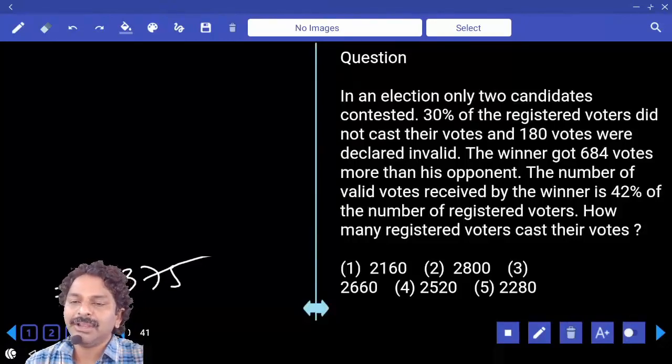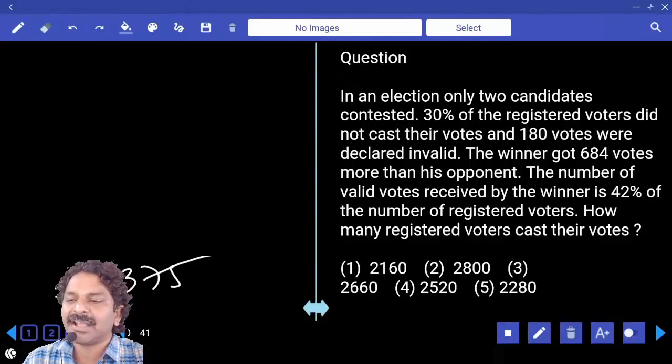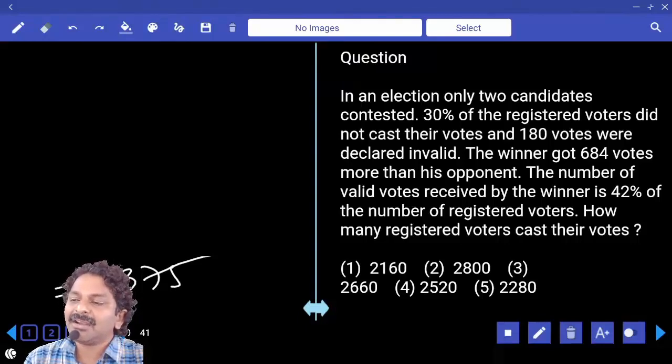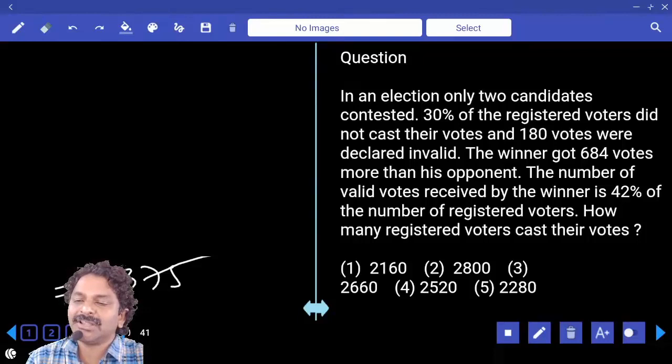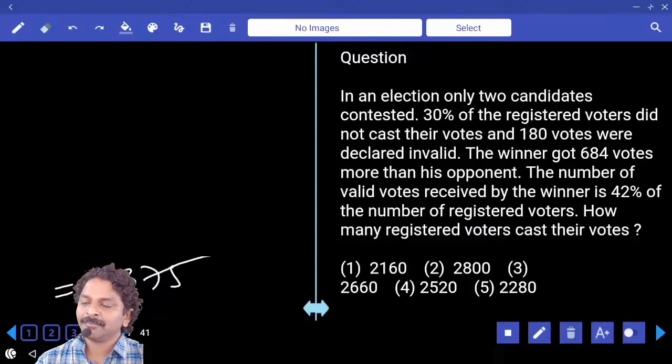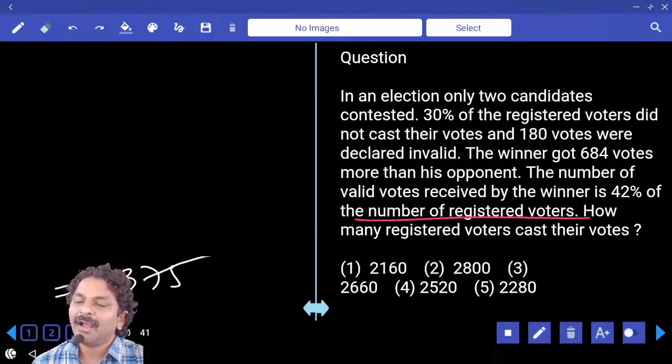In an election only two candidates contested. 30% of the registered voters did not cast their votes and 180 votes were declared invalid. The winner got 684 votes more than his opponent. The number of valid votes received by the winner is 42% of the number of registered voters. How many registered voters cast their vote?